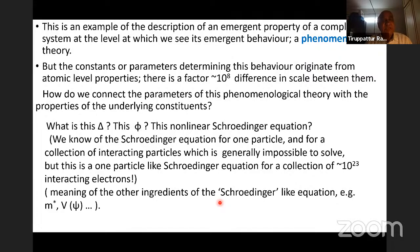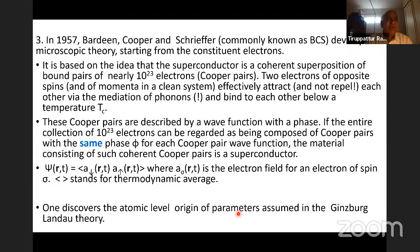The constants or the parameters which determine this behavior originate from atomic level properties. There is a huge difference in scales between the atomic level properties which determine the parameters or constants of this phenomenological theory. The question then is, how do we connect the parameters of this phenomenological theory with the properties of the underlying constituents? Namely, what is this delta? What is this phi? What is this non-linear Schrödinger equation? We know that a single particle has a Schrödinger equation. Formally, a collection of interacting particles also has a Schrödinger equation, but generally we cannot solve it.